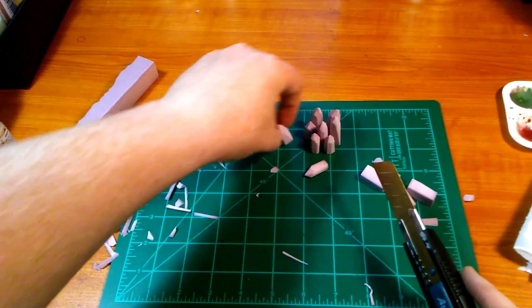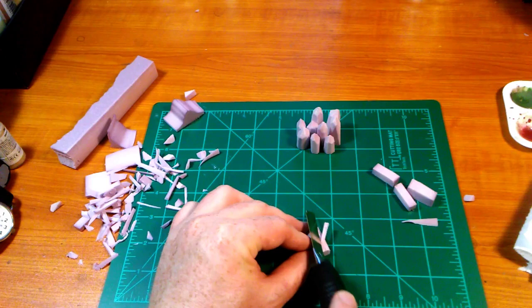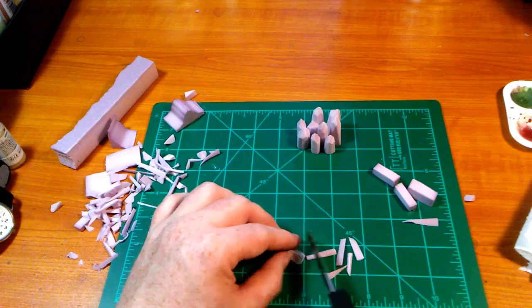In order to get the look I'm going for I slice the edges off the long sides of the rectangular pieces then sharpen the top of the crystal. I make sure to leave sharp edges as this will make the highlighting easier later.